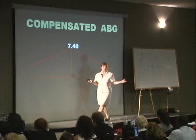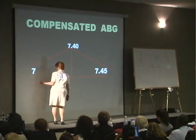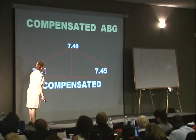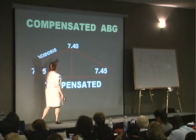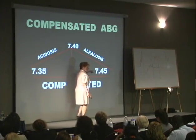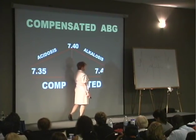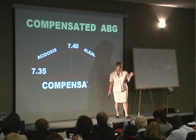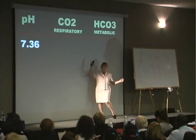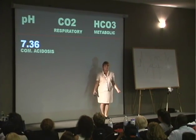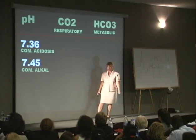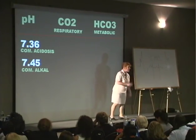But if you have a pH between 7.35 and 7.45, then the kid's first name is going to be compensated. Any pH between 7.35 and 7.40 will have the first name of compensated, last name of acidosis. Any pH between 7.40 and 7.45 will have the first name of compensated, last name of alkalosis. So: 7.36 — first name compensated, last name acidosis. 7.45 — first name compensated, last name alkalosis. Step number one: look at the kid's pH, get the kid's first and last name.